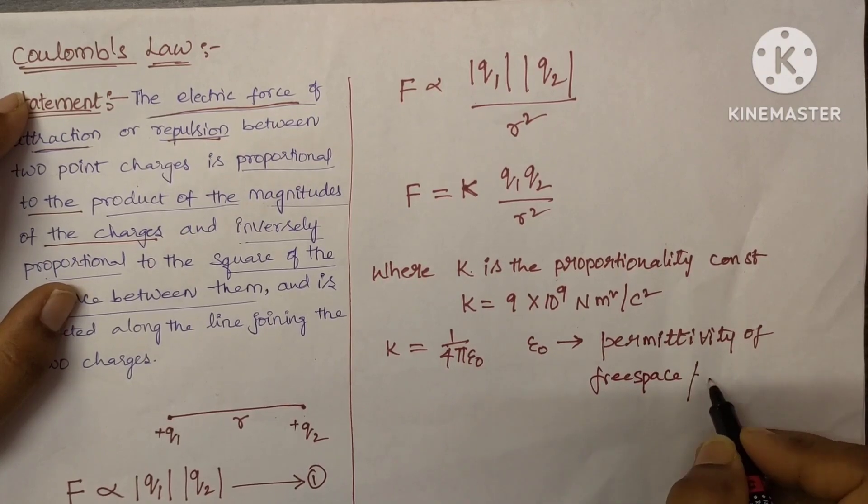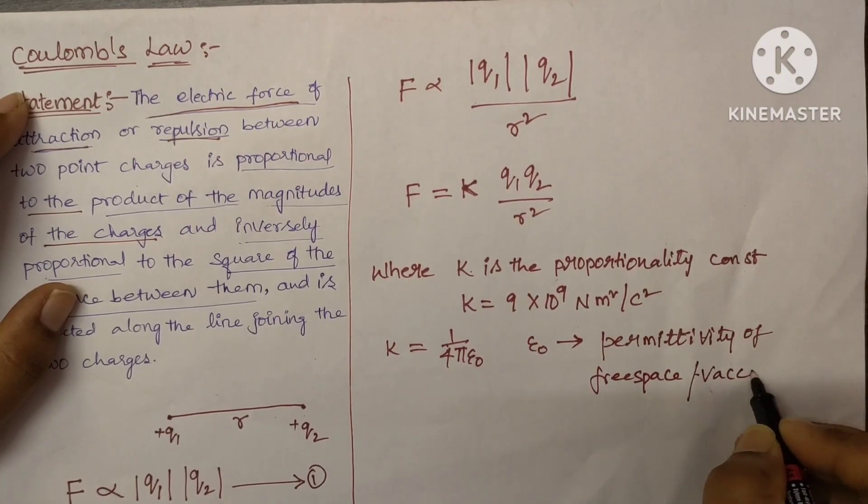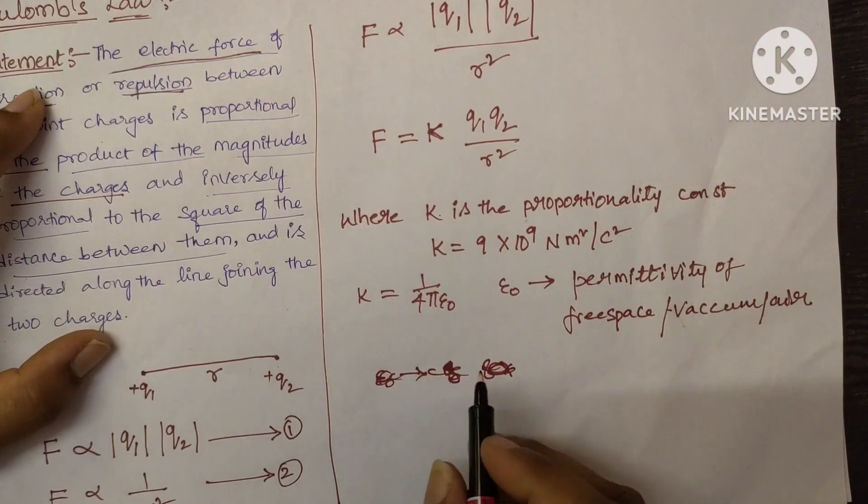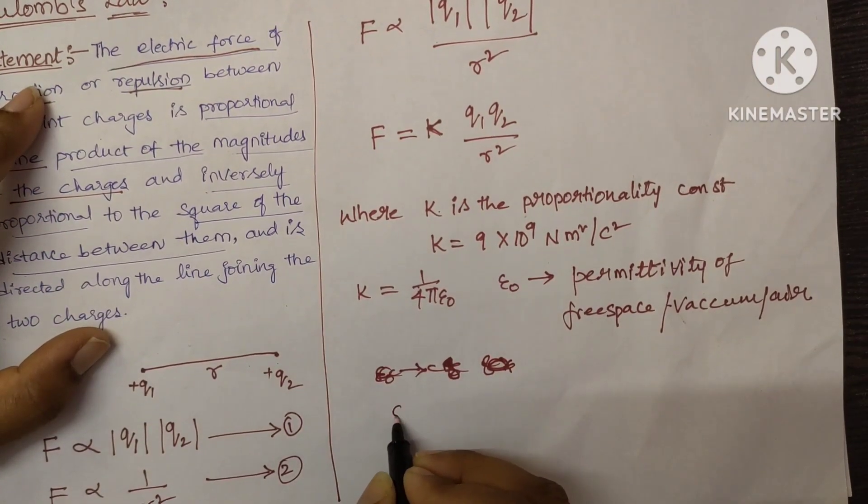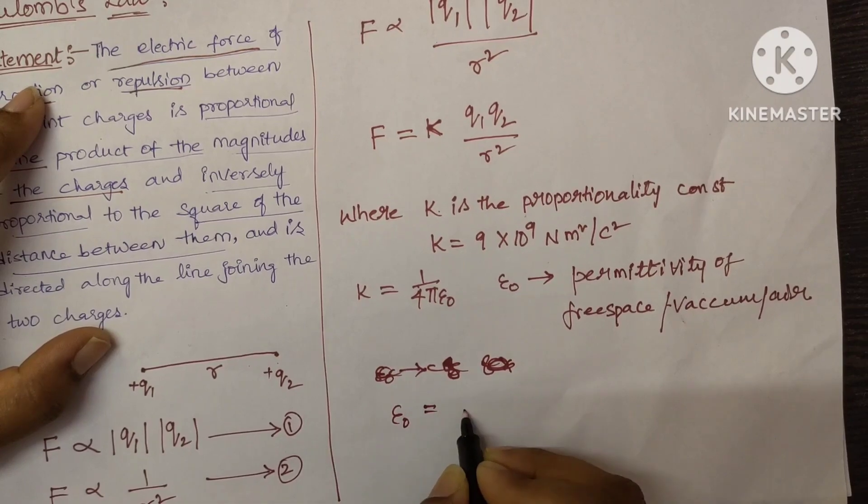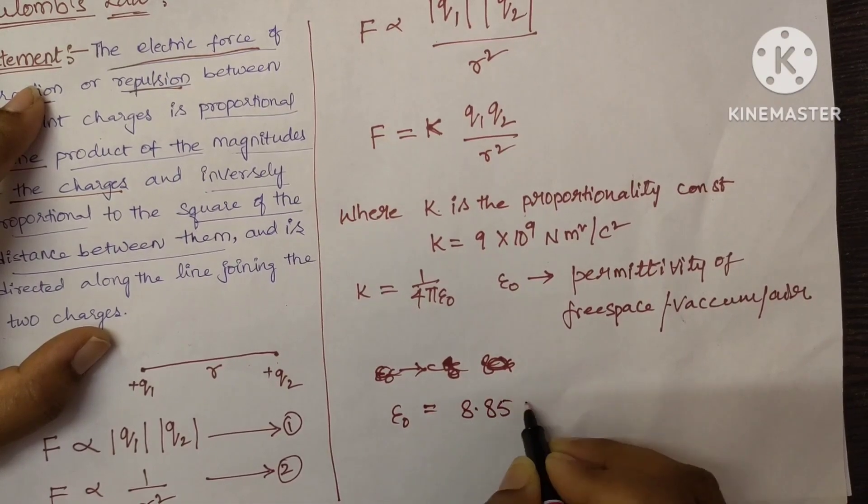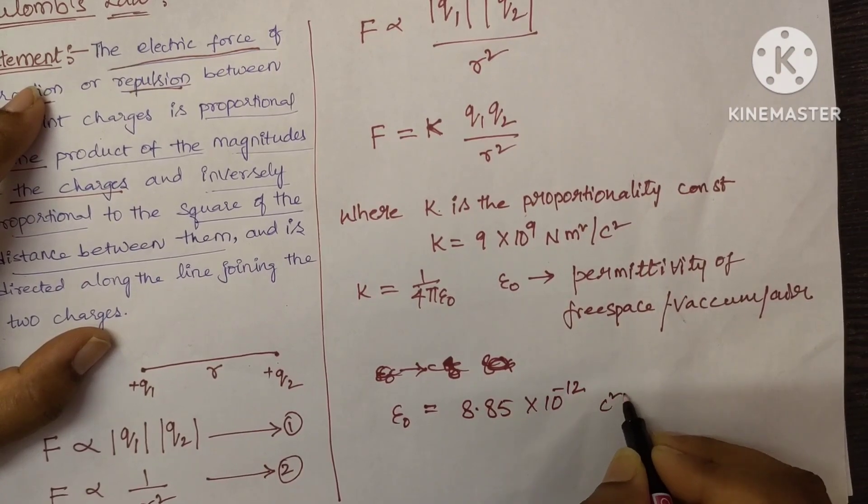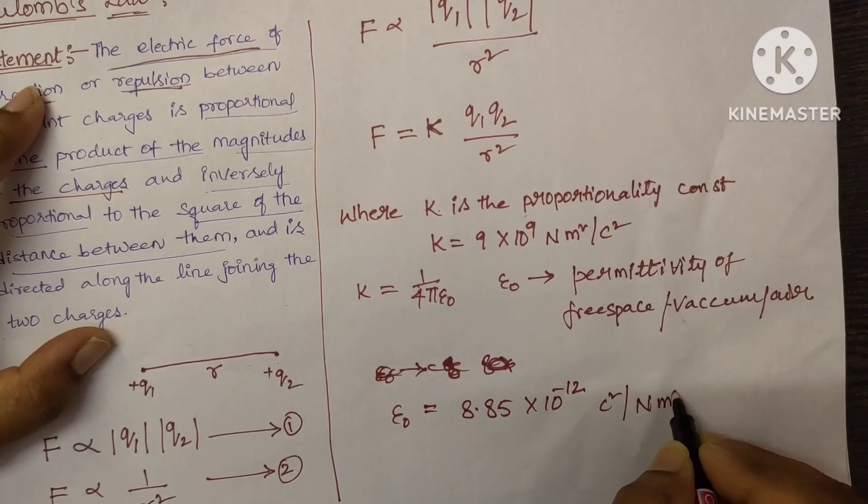Permittivity of free space or vacuum or air. And the value of permittivity of free space is epsilon 0 is equal to 8.85 into 10 to the power of minus 12 Coulomb square per Newton meter square.